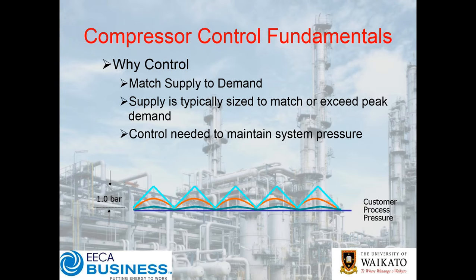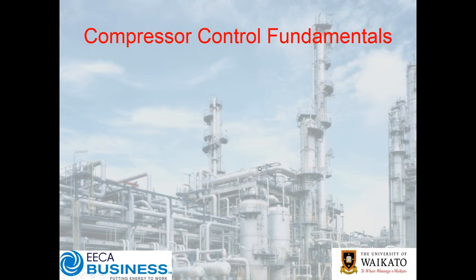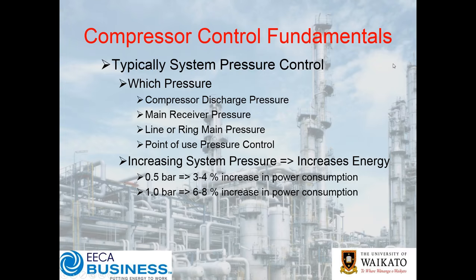You end up with a compressor that's quite lightly loaded most of the time, which can tend to be highly inefficient. Typically your system is going to be controlled based on pressure, and depending on the nature of your control, you might be plus or minus half a bar or more, down to plus or minus 0.1–0.2 bar. Bigger swings in pressure have a consequence in terms of how closely you can drop your pressure to what you actually need.